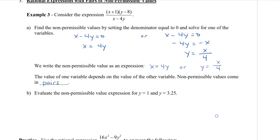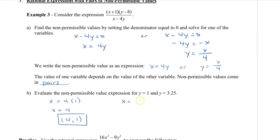If we evaluate the non-permissible value expression for y equals 1, we plug into x equals 4y to get x equals 4 times 1, so x equals 4. The non-permissible value pair is (4, 1). For y equals 3.25, we get x equals 4 times 3.25 equals 13, so the second non-permissible value pair is (13, 3.25).